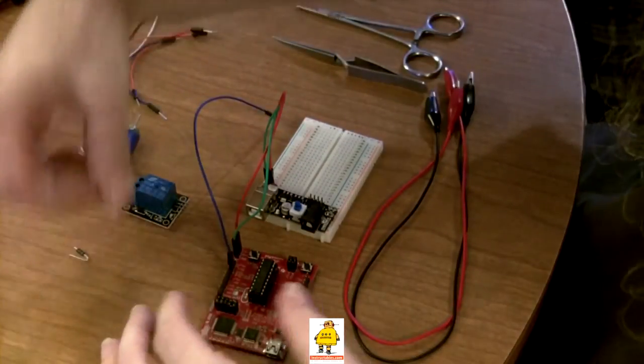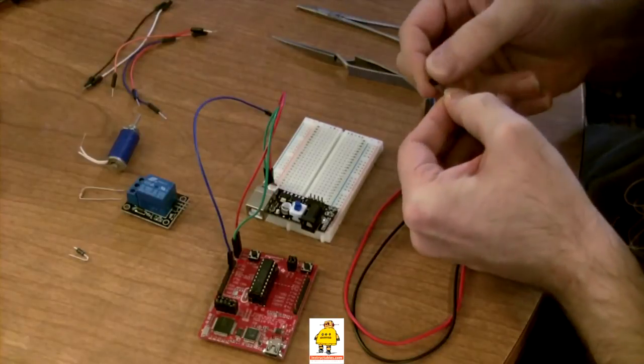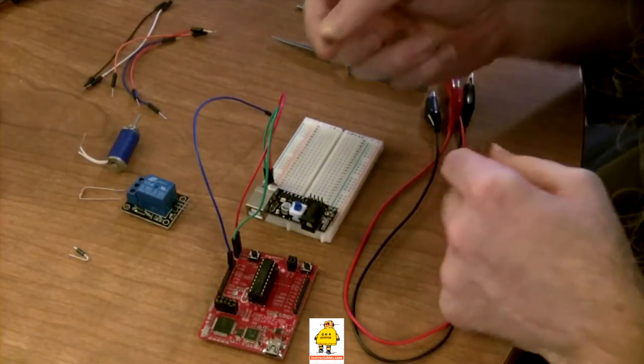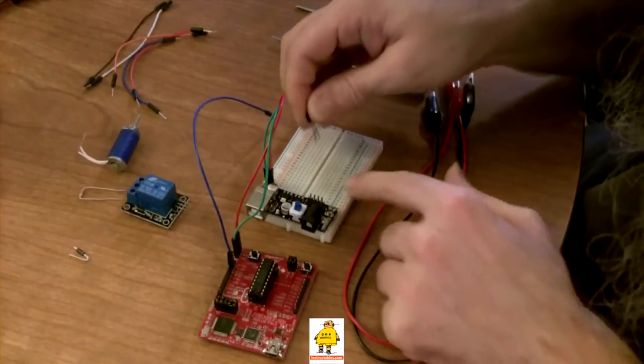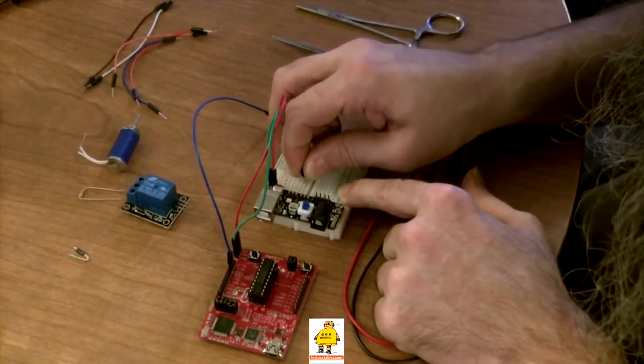Now we need to get our transistor on the board. This is an NPN switching transistor. This is particularly the C945. You don't have to use this one. Just about any NPN will do. Let me shove it in right there.